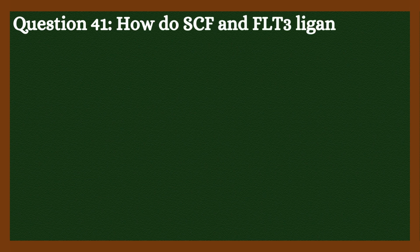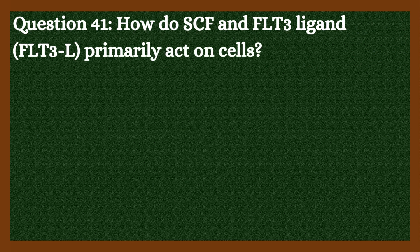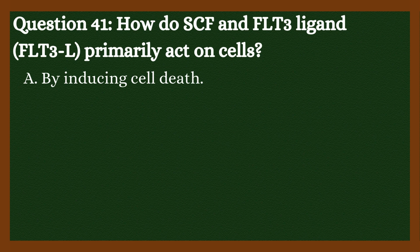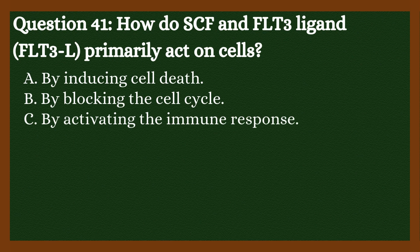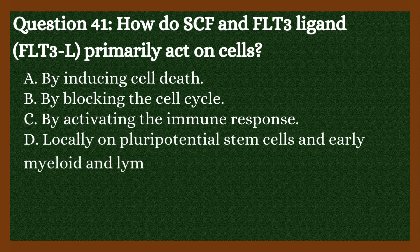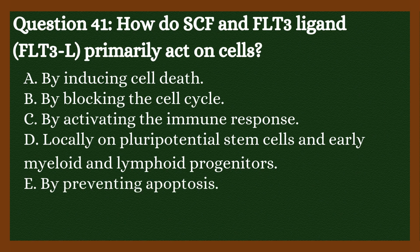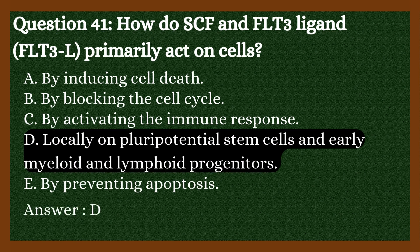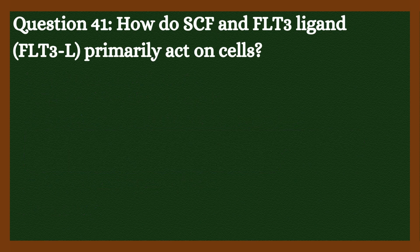Question 41: How do SCF and FLT3 ligand (FLT3-L) primarily act on cells? A. By inducing cell death. B. By blocking the cell cycle. C. By activating the immune response. D. Locally on pluripotential stem cells and early myeloid and lymphoid progenitors. E. By preventing apoptosis. Answer is D. Locally on pluripotential stem cells and early myeloid and lymphoid progenitors.